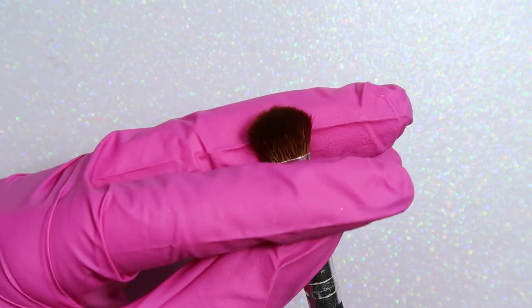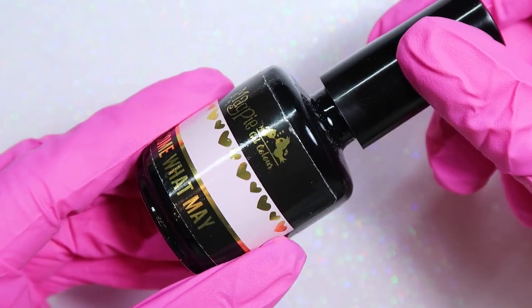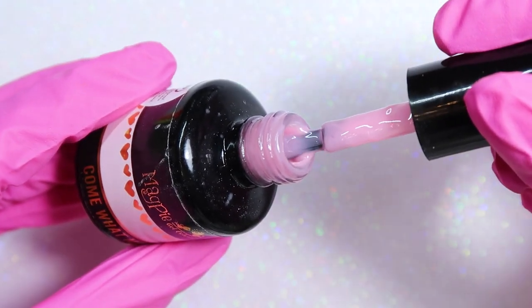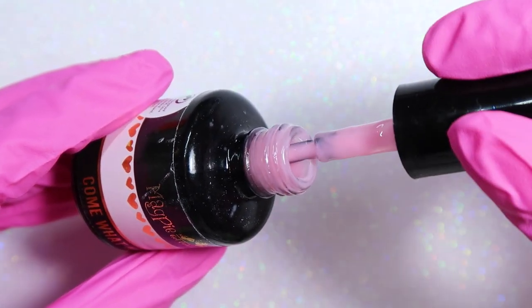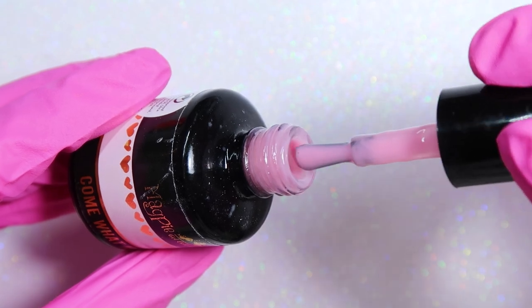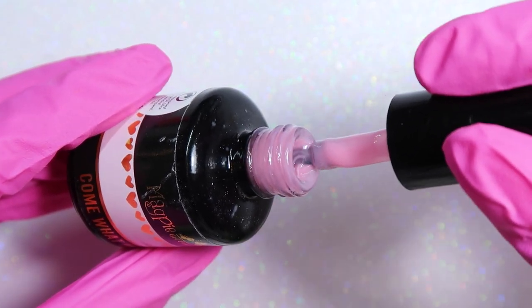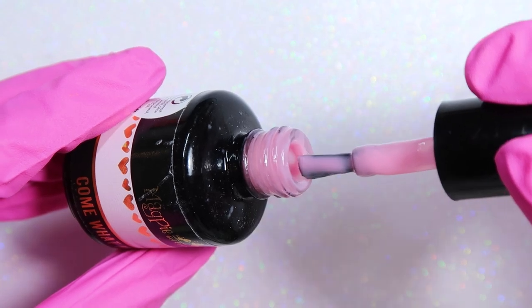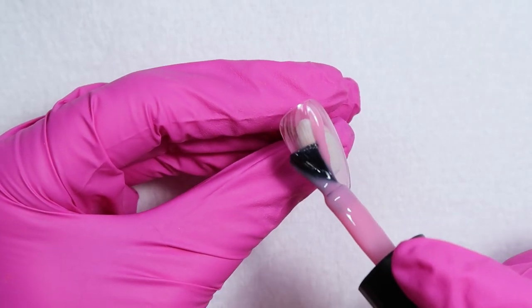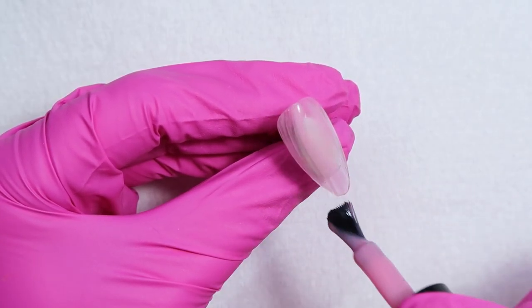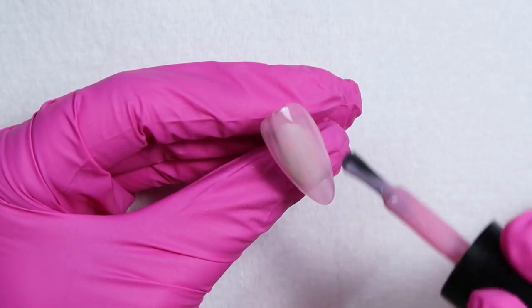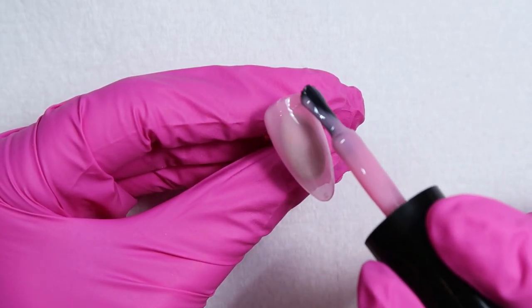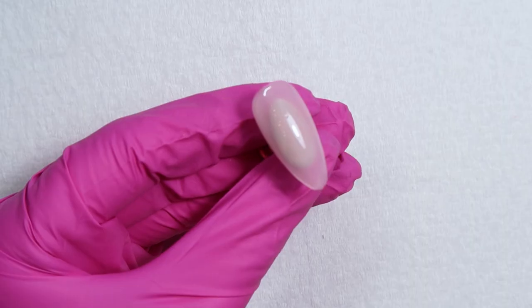Now the first technique I'm going to share with you guys is using a matte top coat and pigments together to create an ombre. And this is going to be probably the most flawless technique. Make sure to take note of the steps because they are really important for creating this flawless ombre.